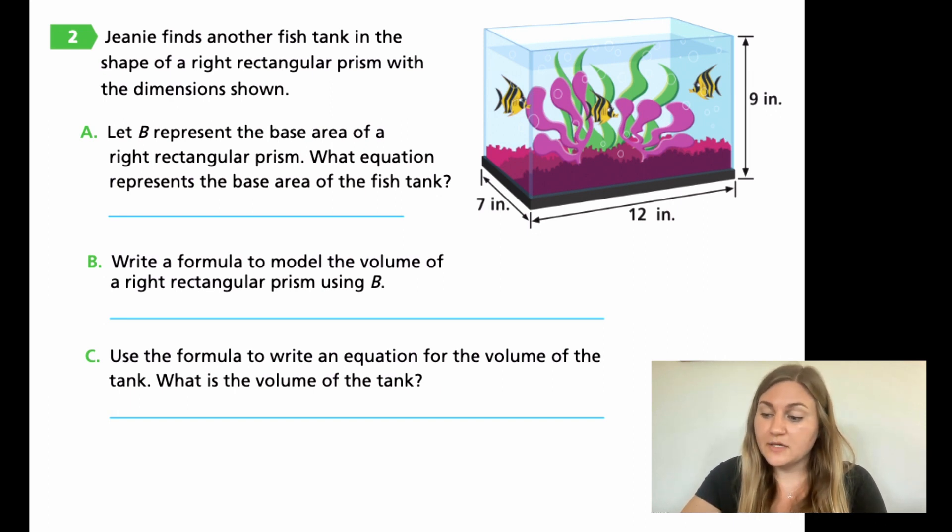For B, write a formula to model the volume of the right rectangular prism using B. So for this one, you're just going to write a formula. You're not going to actually put in the numbers. So use B in the formula to find your volume. So volume equals, and then use B as an example. For C, use the formula to write an equation for the volume of the tank. Now, here's where you're adding in the numbers. So you're going to be adding in the numbers for the equation here. Then you're actually going to be finding the volume and multiplying all three numbers together to find the volume. So go ahead and do all three of these together.